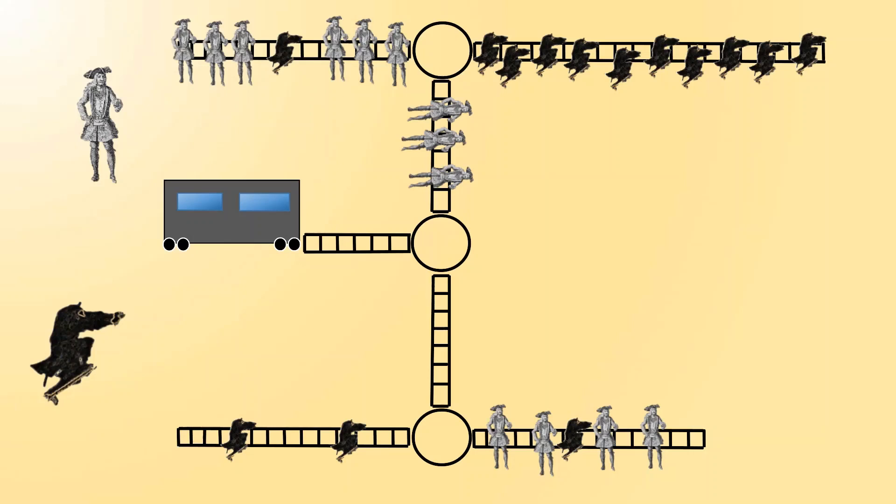The irresponsible trolley company is back again, and this time there are pirates and ninjas down the tracks. Fortunately, the pirates and ninjas can do something about this. Specifically, pirates control a north-south switch, and ninjas control a west-east switch.